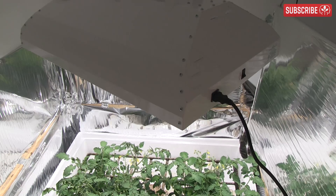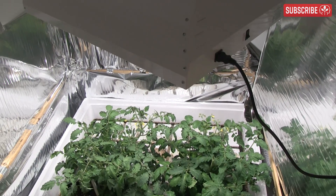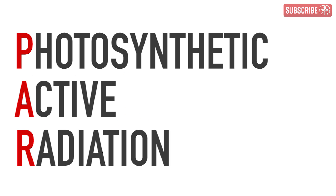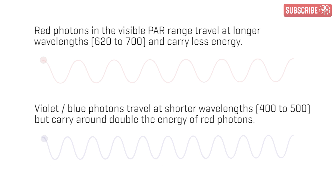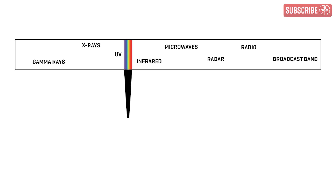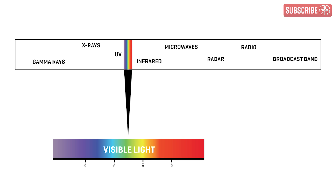First, a quick recap. PAR, or photosynthetically active radiation, is the energy that plants use for growth and bloom. It refers to photons — discrete packets of energy traveling at certain wavelengths between 400 to 700 nanometers. It's also the range of visible light energy, the colors that we humans are able to perceive from red through to violet.